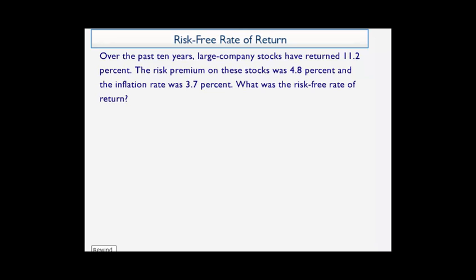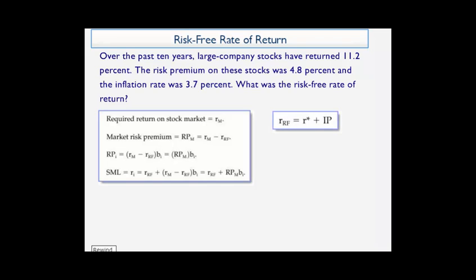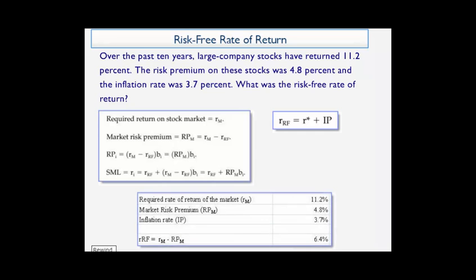Now you can see a number of formulas that you could use to solve this problem. I'll illustrate how I solve it. First, we see that the required rate of return of the market was given in this problem and it was 11.2%. The market risk premium was also given in the problem — it was 4.8% — and the inflation rate was 3.7%.